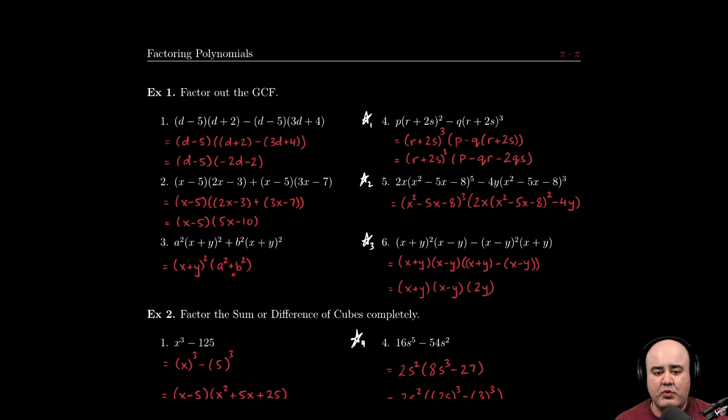pause the video here. Think about why or why not this can be factored further. So why is it this maybe can be factored further, and if it can, figure out what the factors would be. And if it cannot be factored further, explain why or maybe give me a justification for why you think it cannot be factored further.